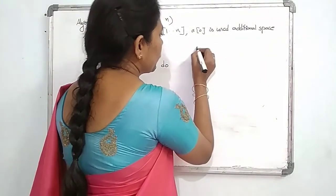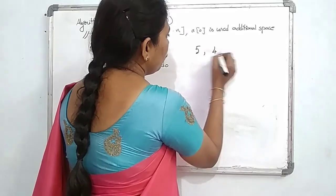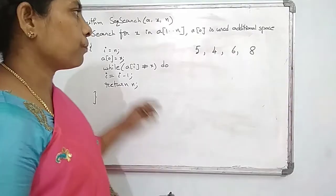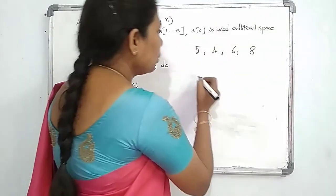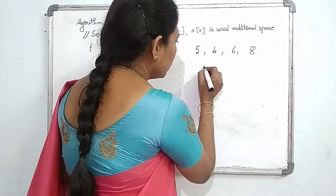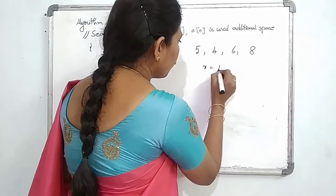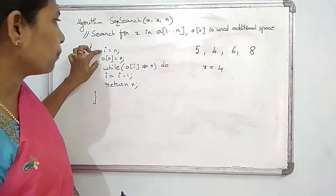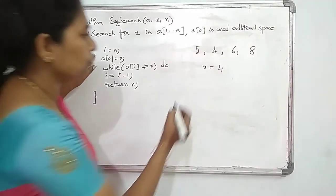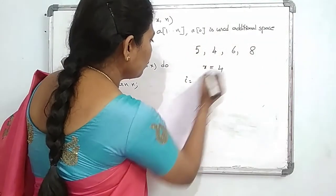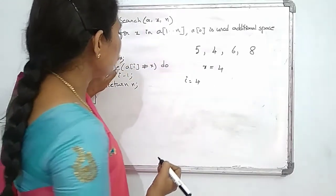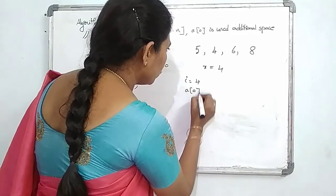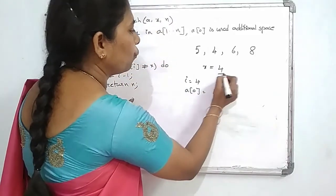Now we will take one example. The elements are 5, 4, 6, 8. We want to find element X, which is 4. Applying the algorithm: I equals N, meaning 4 elements. A of 0 is equal to X, so A of 0 is equal to 4 — the element 4 is stored at position 0.